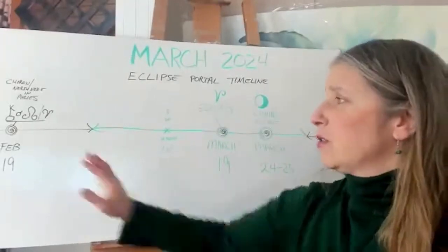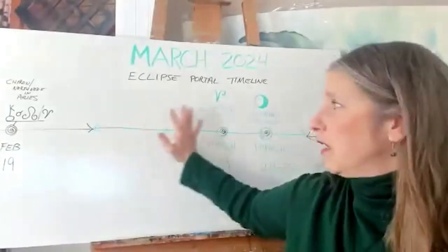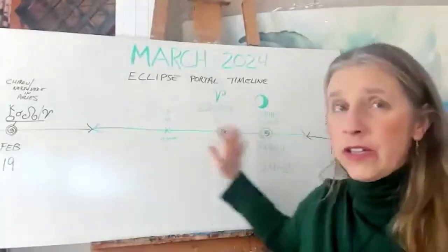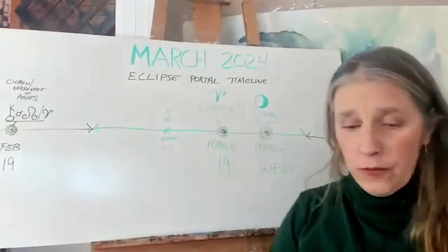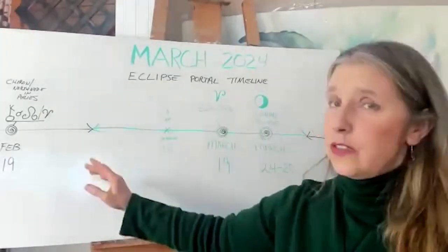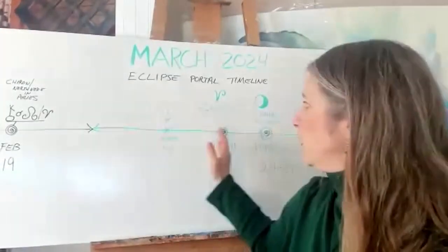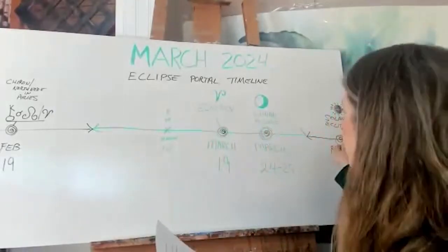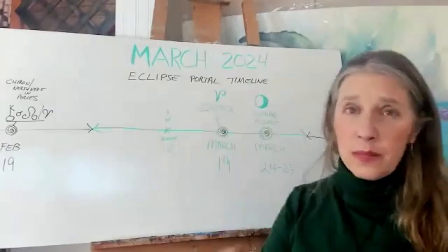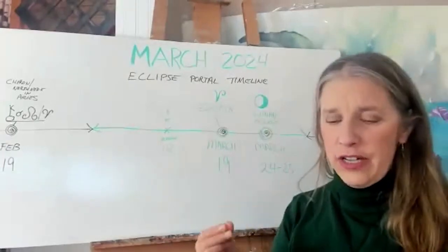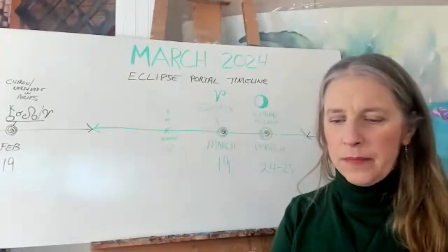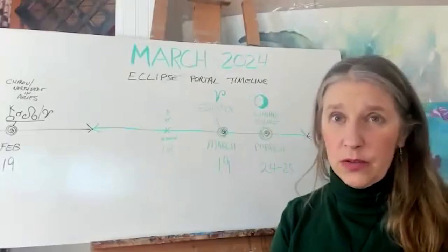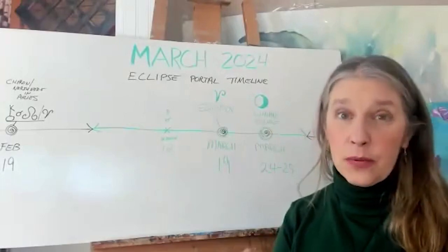This kicks off this entire time frame that we're looking at here for March 2024. What I'm really seeing is it's like this triple doorway before we get to the solar eclipse. This is a period of initiation.